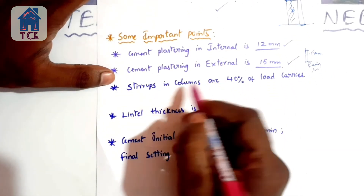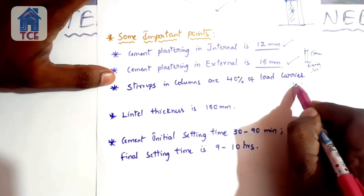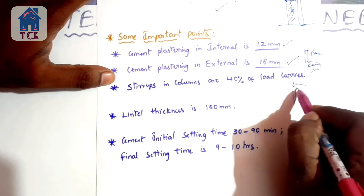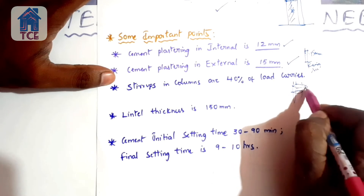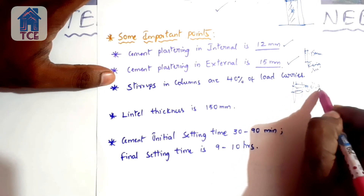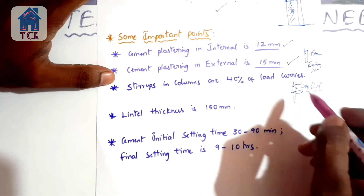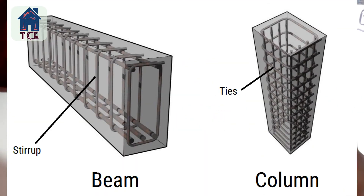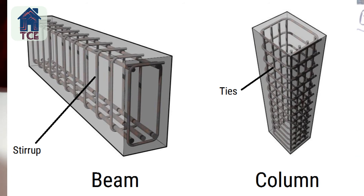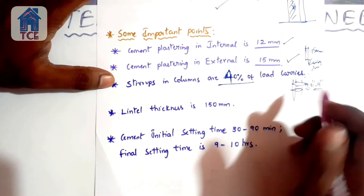Stirrups are spaced at 6 to 9 inches. In columns, stirrups carry 40% of the load. Stirrups provide bonding with the concrete. They carry 40% of the load while the main bars carry the remaining load. Stirrups are sometimes considered negligible in certain load scenarios.